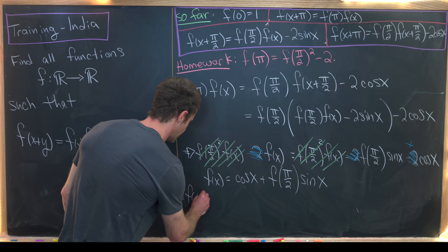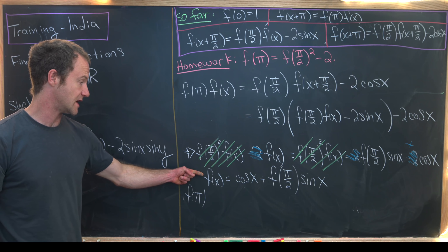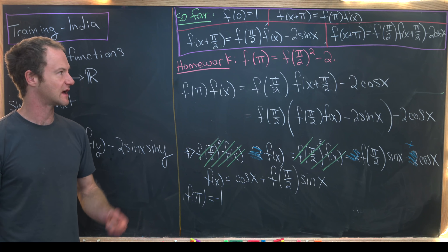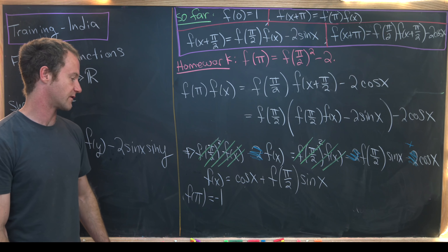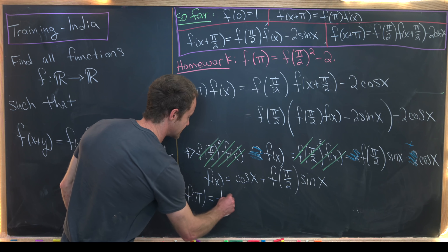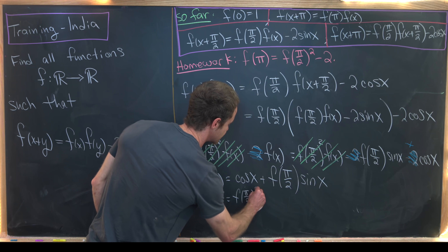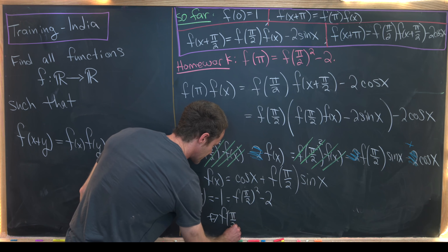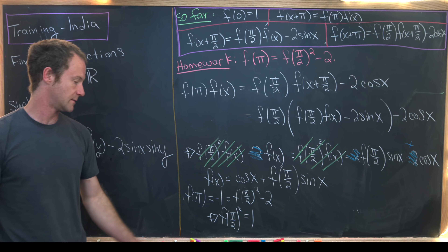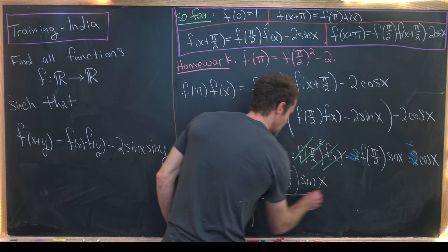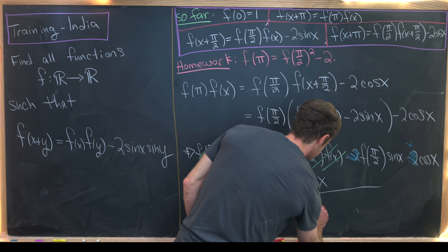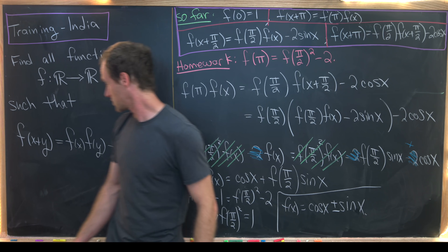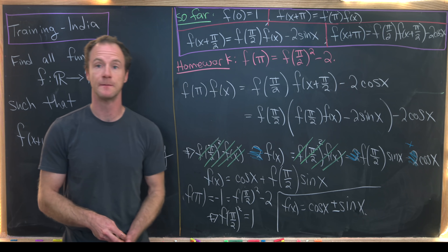Using our equations, evaluating at π gives f(π) = cos(π) + f(π/2)·sin(π) = −1, since sin(π) = 0. But we also know f(π) = f(π/2)² − 2. Putting these together, f(π/2)² = 1, so f(π/2) = ±1. That means the final solution is f(x) = cos(x) ± sin(x), representing all possible functions satisfying this functional equation.